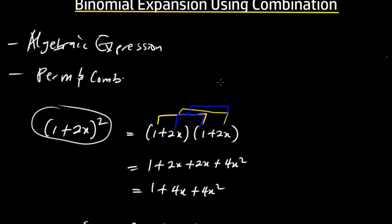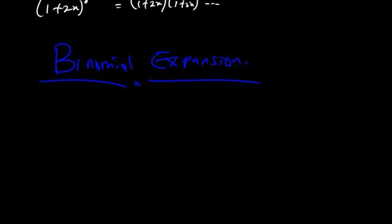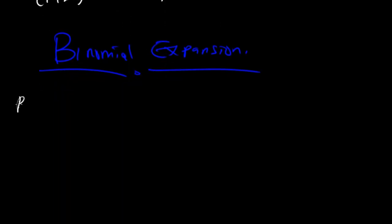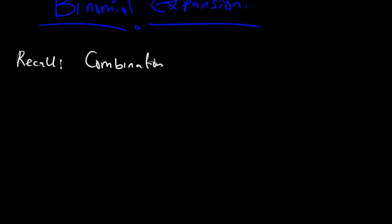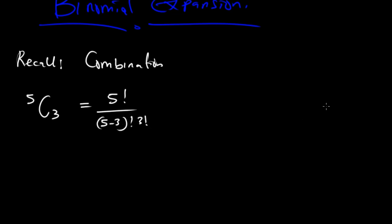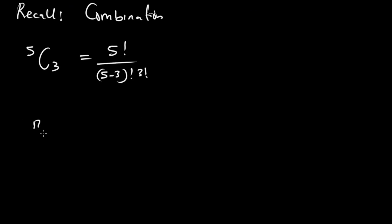We are also basing this tutorial on the principle of permutation and combination. Let me do a quick recall on the principle of combination. Combination is about selection, so if we are to select 3 teams from 5 teams we basically have 5C3. We are trying to select 3 from 5, and in mathematics this is simply 5! / ((5−3)! · 3!).